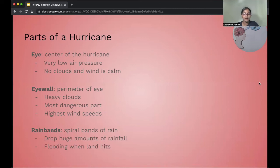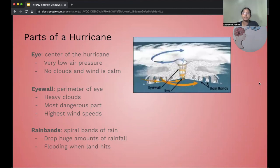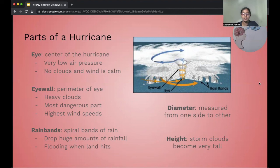Next is rain bands. So every hurricane has rain bands. Rain bands are spiral bands of rain, and these rain bands drop huge amounts of rainfall. And what happens is that when the hurricane hits land, this is where flooding occurs. Here's a diagram to show you the three different parts: the eye, the eye wall, and the rain bands. The diameter of a hurricane is measured from one side to the other, and the height of the hurricane is basically when the storm clouds become very tall.